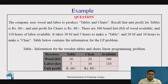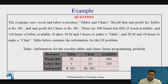Now let's see an example. In the present question, we observe that the company is of the manufacturing type and it manufactures the table and chair. The raw material available is wood, and the labor time is defined in hours. They have defined the unit profit of the table as well as the unit profit of the chair. The table gives the overall picture of the quantity of wood required for the chair and table, and the labor hours required for their manufacturing.